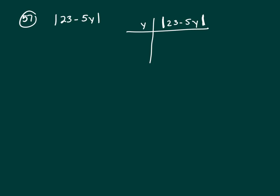So, for example, if you let y be 0, that would give you absolute value of 23, which is 23. Well, that's definitely not it.